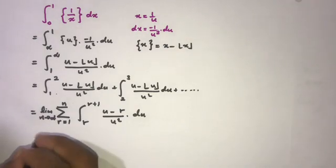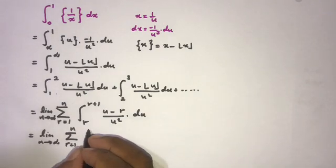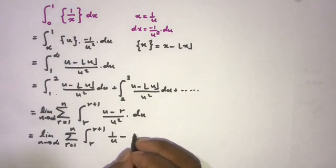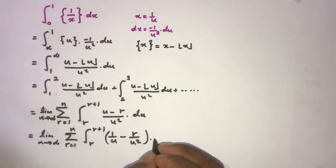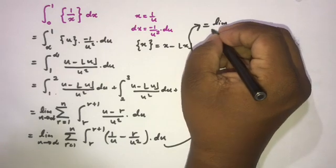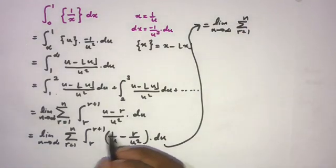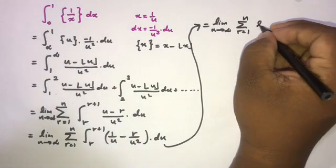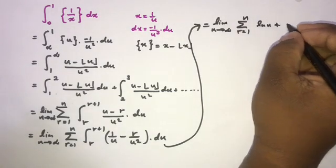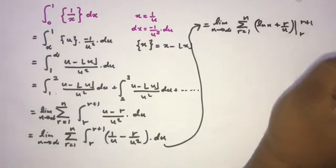Okay, we can write this as the limit as n approaches infinity of the sum from r equals 1 to n, integrating 1 over u minus r over u squared du, from r to r plus 1. We know the integral of 1 over u is natural log of u, and the integral of r over u squared gives plus r over u. Evaluating from r to r plus 1.